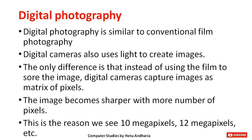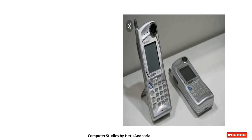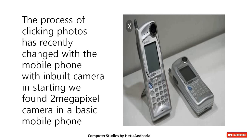There is a reason we see 10 megapixel or 12 megapixel — when this book was written, those were new figures. Nowadays we can click photos on smartphones. These are older types of mobile phones in which photography was possible. The process of clicking photos has recently changed with the inbuilt camera in mobile phones — in the beginning we found 2 megapixel cameras in basic mobile phones.